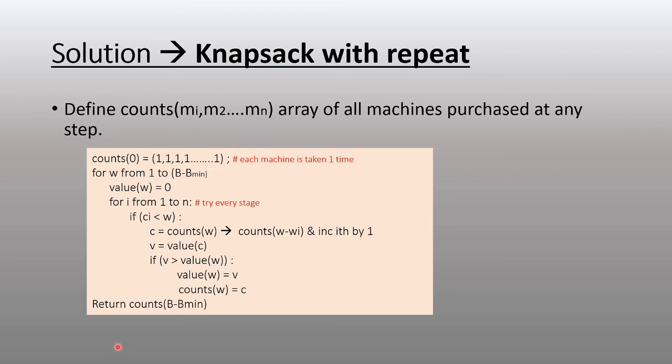This list of counts gives us the number of times each machine was purchased. The next question is: what is the efficiency of this algorithm? Because there are two loops here, the first loop going to the budget size and the second loop to n, the order of this algorithm is O(nw).